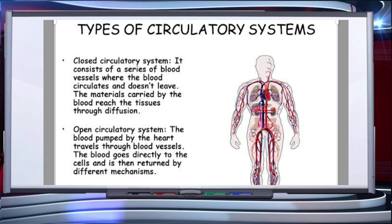Annelids and chordates have a closed circulatory system, in which the blood pumped by the heart is always circulated through a closed network of blood vessels. This pattern is considered more advantageous as the flow of fluid can be more precisely regulated.